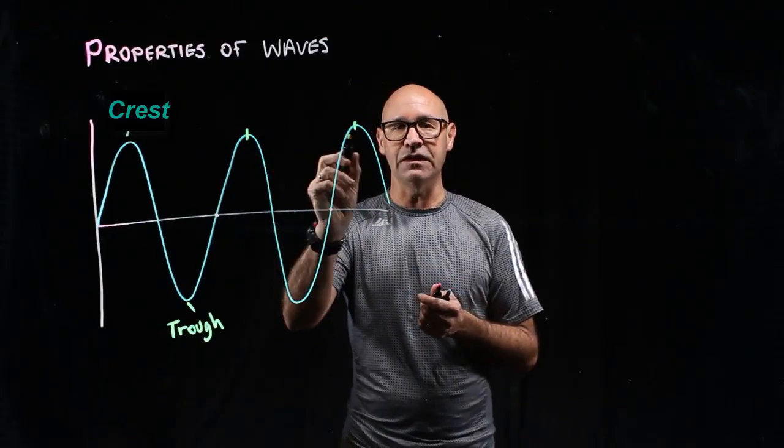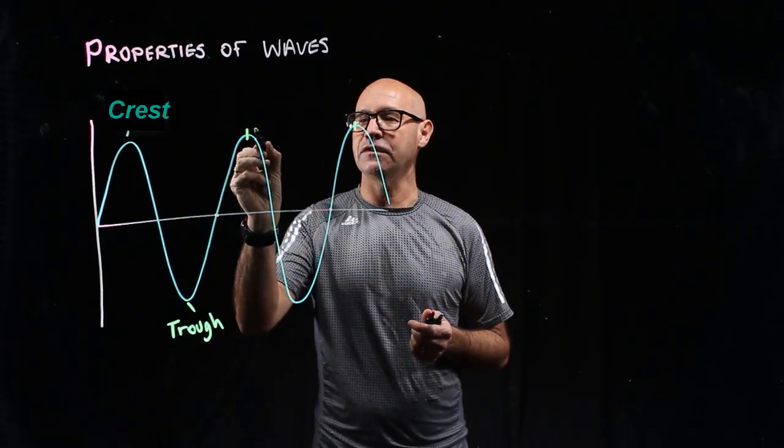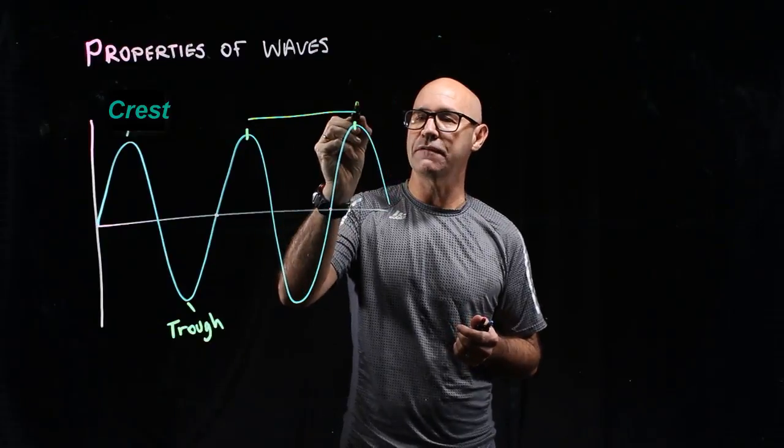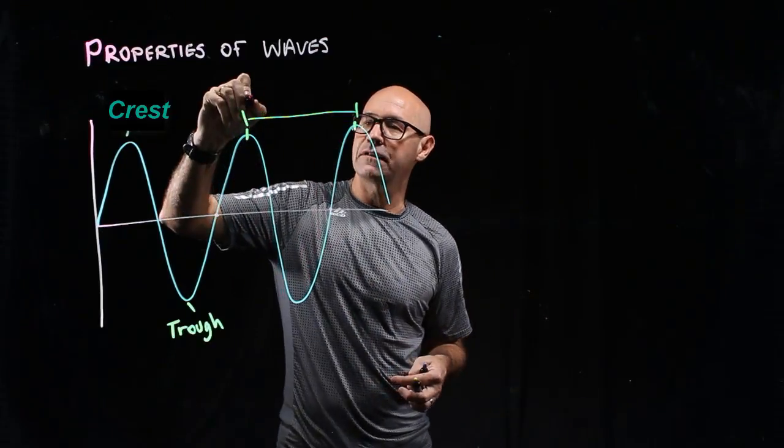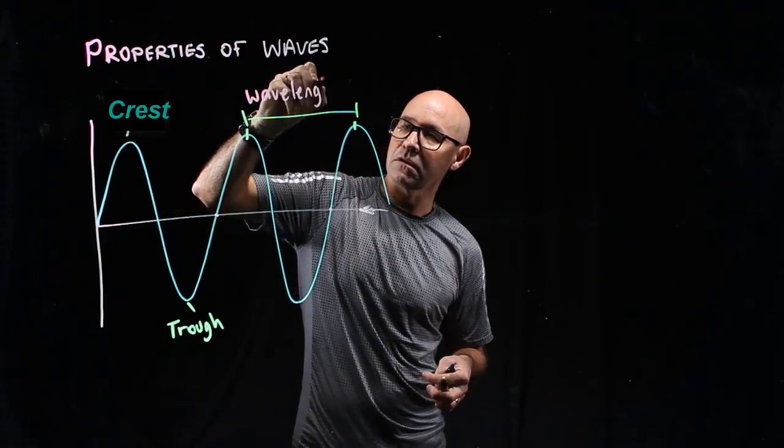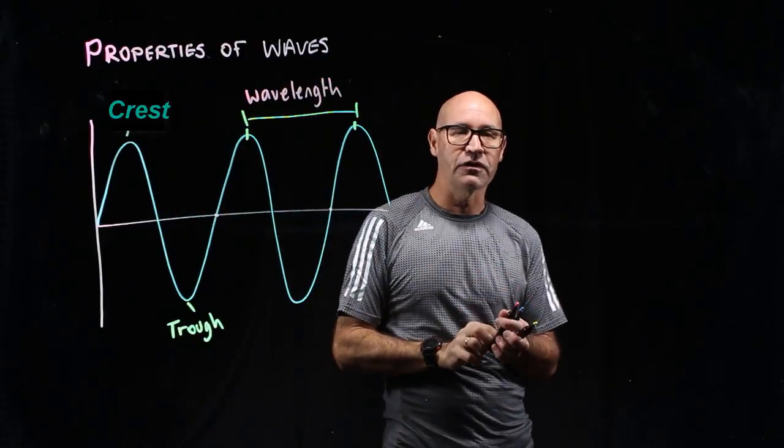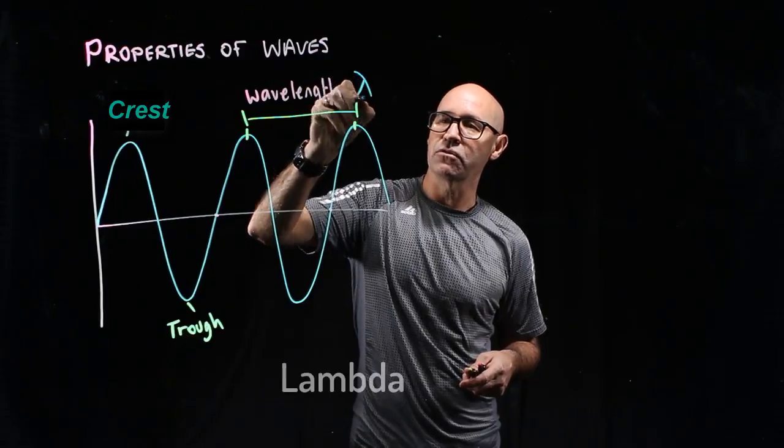That distance we can measure is actually called wavelength. The length of one wave is called wavelength, and it has the symbol, the Greek symbol lambda.